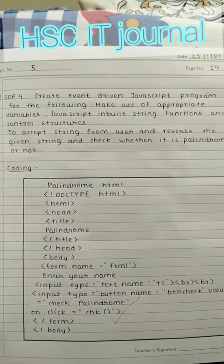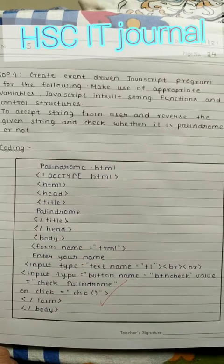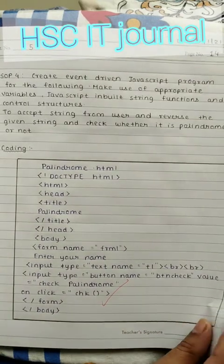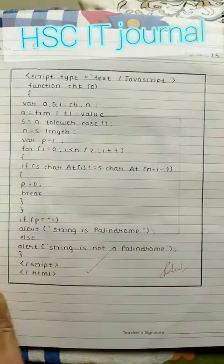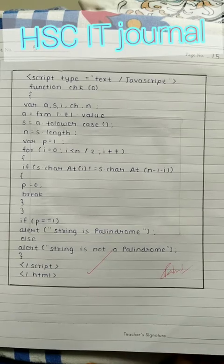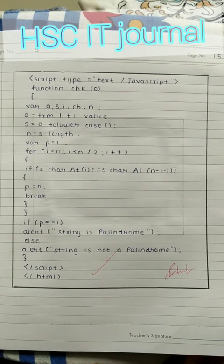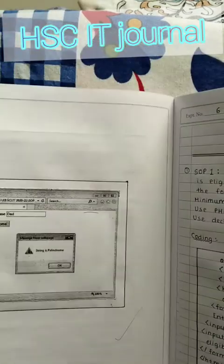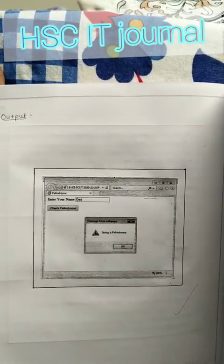This is the program which we can see: string is palindrome and string is not palindrome. This is the execution of the program. You can see the output shows the string is palindrome.